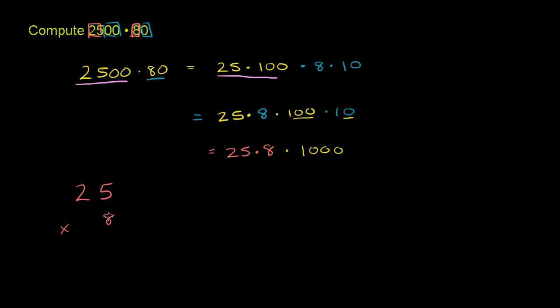So let's figure out what 25 times 8 is. Now 5 times 8 is 40. Put the 0 down, carry the 4. 8 times 2 is 16, plus 4 is 20. So it's an even 200, which makes sense. 4 times 25 is 100, or 4 quarters make a dollar. So 8 quarters would make $2. So this part right here is 200.